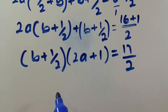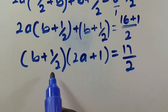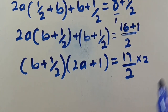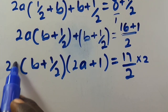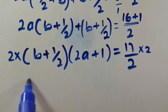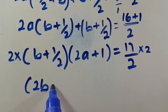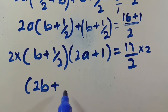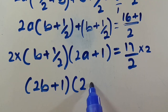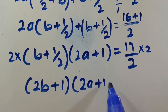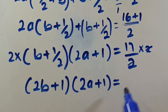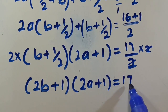Let's multiply both sides by 2. Multiplying gives us 2b plus 1 on the left bracket term, and 2a plus 1 on the other, while the 2s cancel on the right side, leaving us with (2b plus 1)(2a plus 1) equals 17.